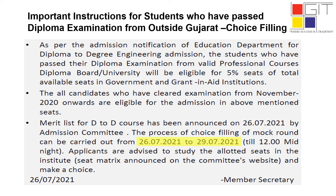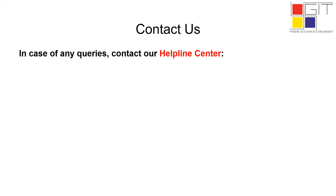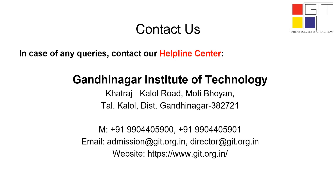The merit list for D2D courses has been announced on 26 July 2021 by the admission committee. The process of choice filling for the mock round can be carried out from 26 July 2021 to 29 July 2021 till 12 midnight. Applicants are advised to study the allotted seats in the institute via the seat matrix announced on the committee's website. For any queries, contact our helpline center at Gandhinagar Institute of Technology. Thank you.